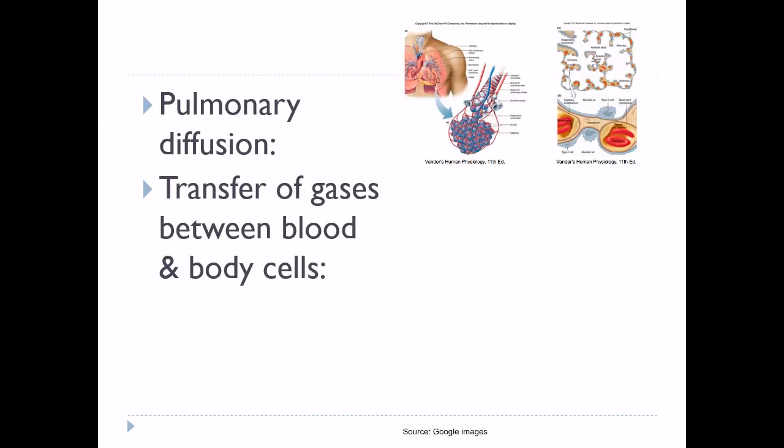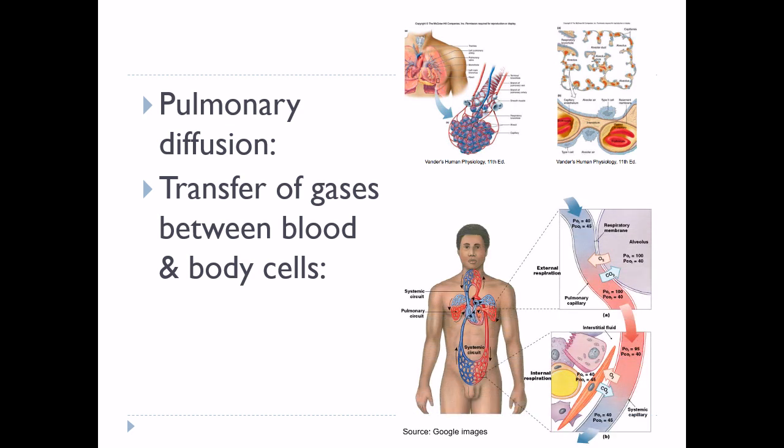Second, pulmonary diffusion — that is transport of gases between alveoli and blood. And third, that is transport of gases between blood and body cells.